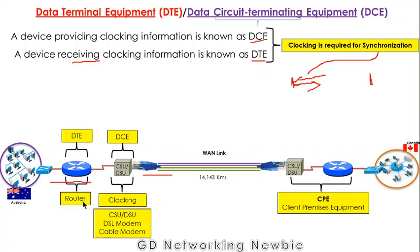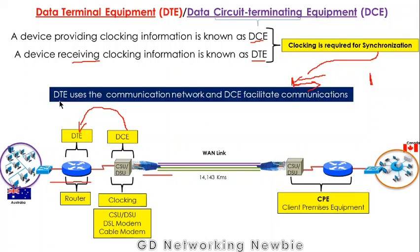The DTE can be a router or a computer — they don't generate clocking information, they receive it from the DCE. DTE devices are the end nodes that actually use the communication network, such as computers and routers. DCE, on the other hand, facilitates the communication — whatever data is received on one side, DCE sends it to the other side. So DCE facilitates communication while DTE uses it.